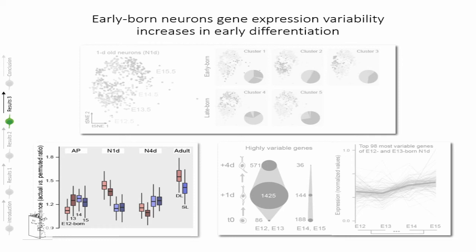We used dimensional reduction to investigate the variance of gene expression across the full dataset. As you can see from this plot, where we look at the variance of one-day-old neurons, this is the moment when we find the highest variance of gene expression and also the highest difference in variance between early born and late born neurons. This information also translates to the adult cortex: performing the same test on a dataset of adult neurons, we were able to identify a higher variance in deep layer cortical cells — early born — against superficial layer cortical cells — late born.